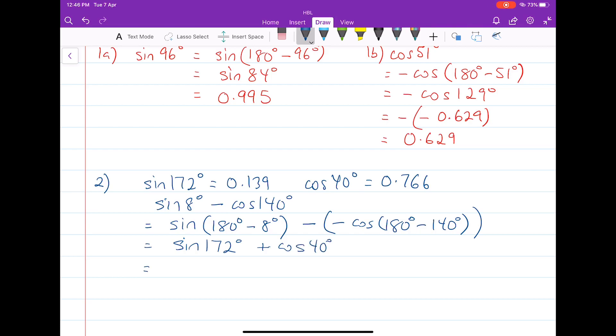Let's substitute in all these values here. 0.139 plus 0.766, which is equals to 0.905.